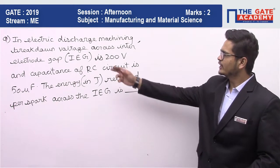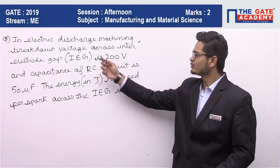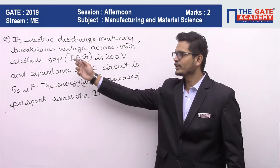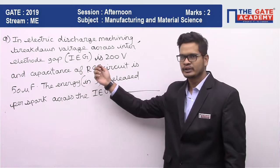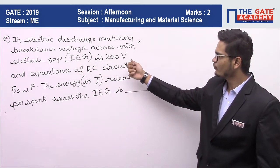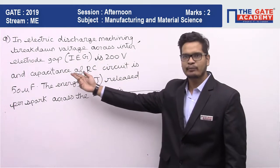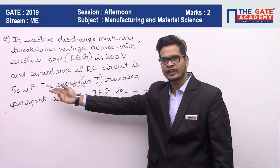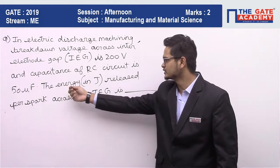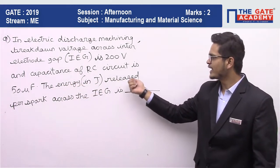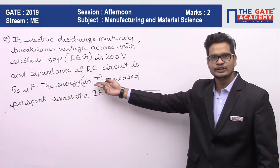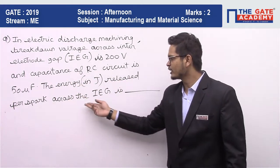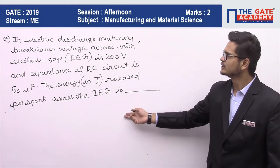So the question is: in electric discharge machining, the breakdown voltage across the inter electrode gap is 200 volts and the capacitance of the RC circuit is 550 microfarads. The energy released in joules per spark across the IEG is?